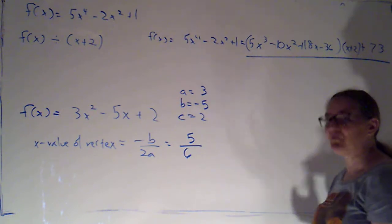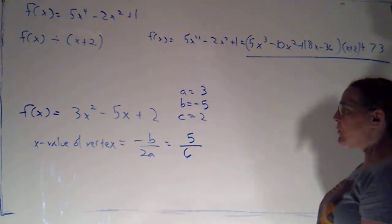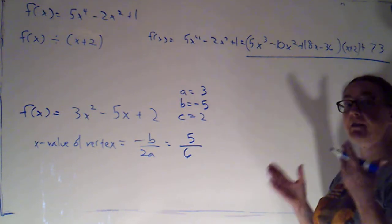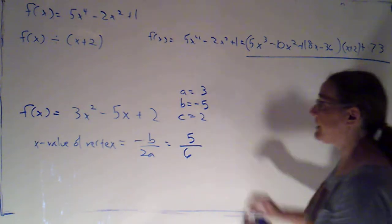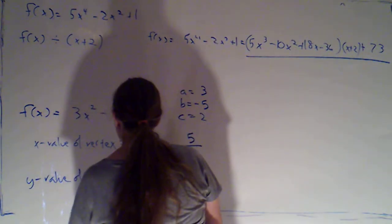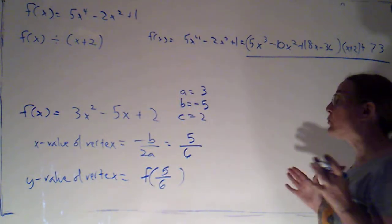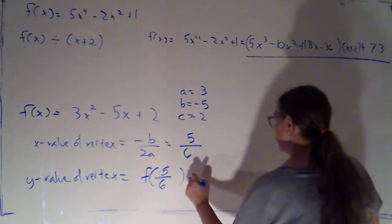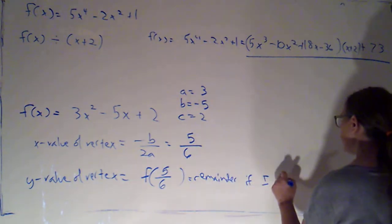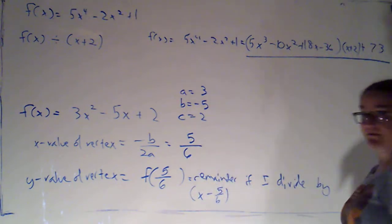Now we often saw that we often got vertices where we had fractional values and we had to plug those in. And it wasn't the end of the world. But this now gives me an alternate way of doing it rather than plugging in the fraction. If I want, I can say I know the y value of the vertex is going to be my function evaluated at 5 sixths. But I know that's going to be the remainder I get if I divide by the corresponding factor x minus 5 sixths.